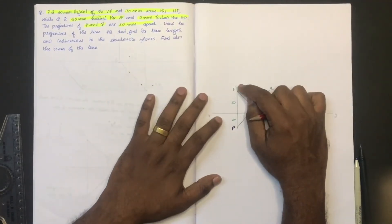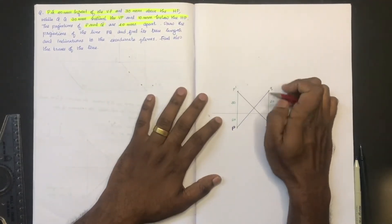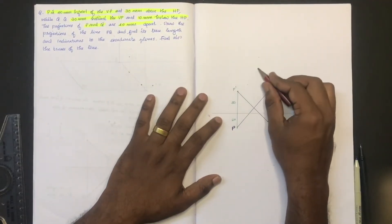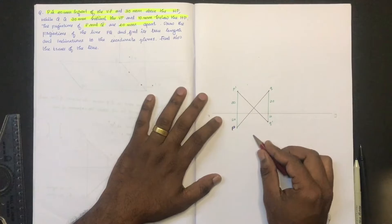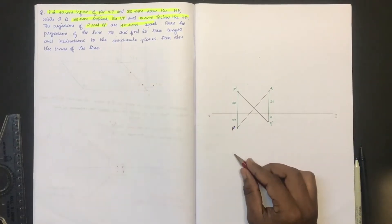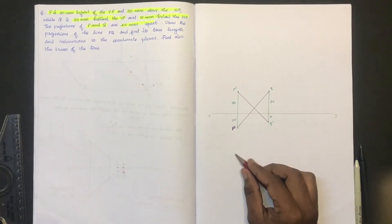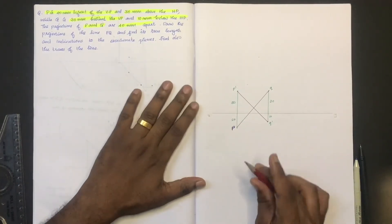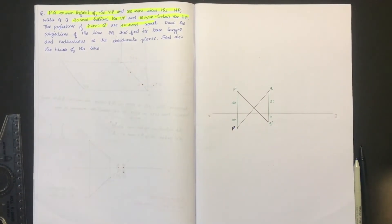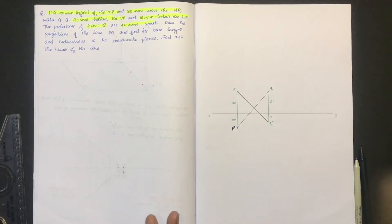We have P-dash, Q-dash, and Q-dash. The direction of drawing the perpendicular will be different if the plan or elevation of the line is crossing the XY line — that means all lines will be in two different corners.